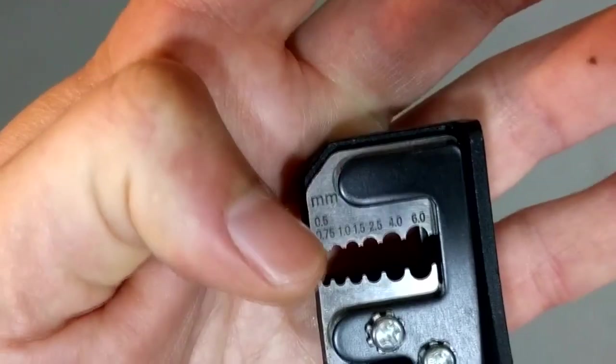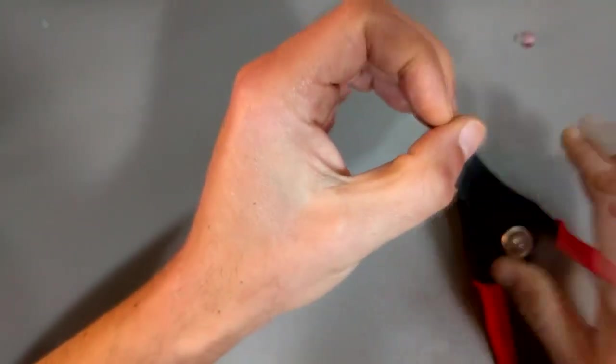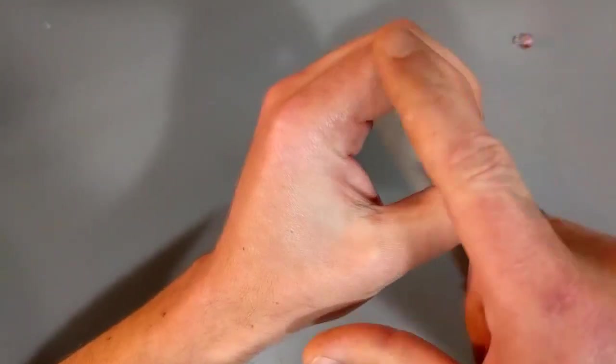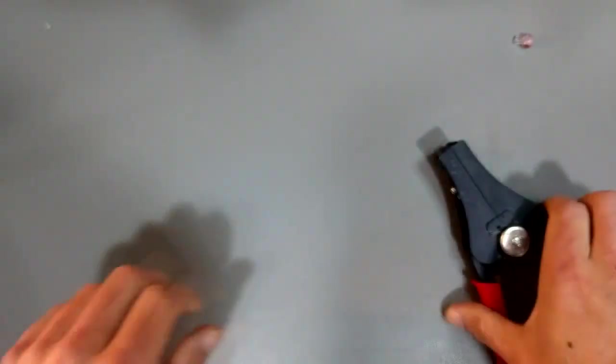And the beauty is you have these little blades here, and basically that actually clamps around the copper and insulation. It clamps perfectly around the insulation and then pulls and strips it off.